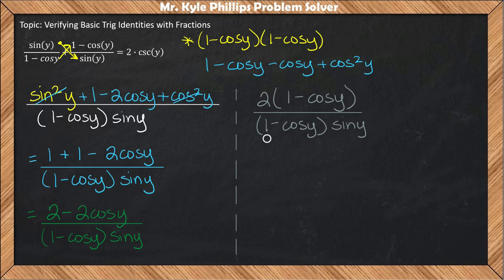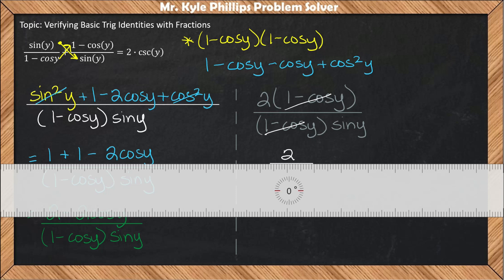Now we can reduce the binomial in the numerator and the same binomial in the denominator. We'll cross these out and our simplified solution should be 2 over sine y.